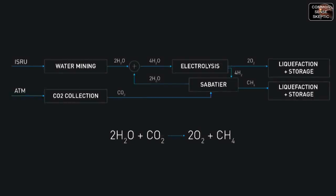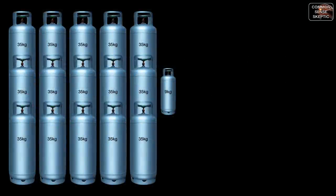We finally have the raw ingredients ready for the Sabatier process: pure carbon dioxide gas and pure hydrogen gas. The Sabatier process requires the chamber be heated up to 400 degrees Celsius and the pressure needs to reach 30 bar. We don't have an estimate on the amount of energy this process will require, but there is a way to come up with an absolute minimum requirement.